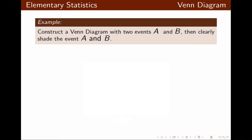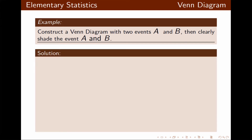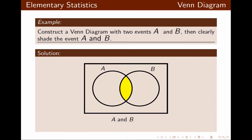Now I want to do the same thing but shade the event A and B. The event A and B will be the overlap of circles A and B, so I'm shading the overlap of the two circles, which is the yellow section in this Venn diagram.